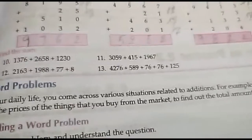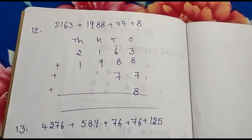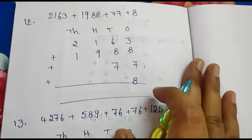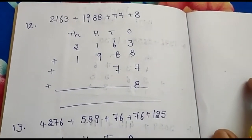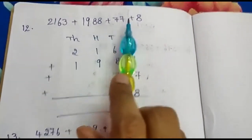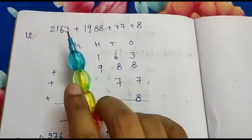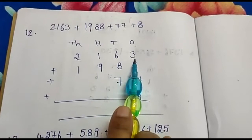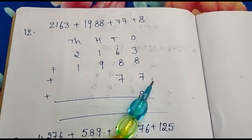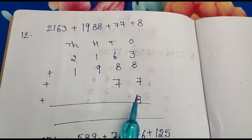Now we have horizontal additions. Let us see these horizontal additions in the notebook. Practice 2.2, second section — horizontal additions, problems 10 and 11. I am not doing those — I will give you those two as homework. Now we have problems 12 and 13. First one: 2,163 plus 1,988 plus 77 plus 8. Arrange them according to their place values.